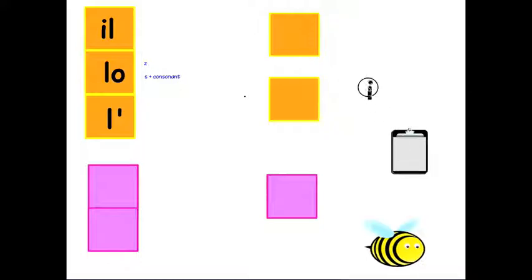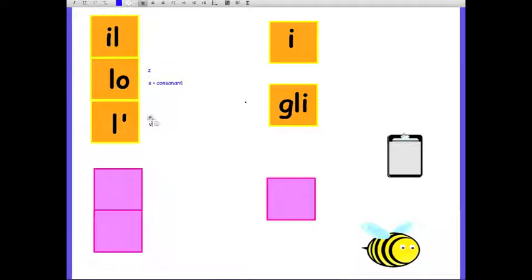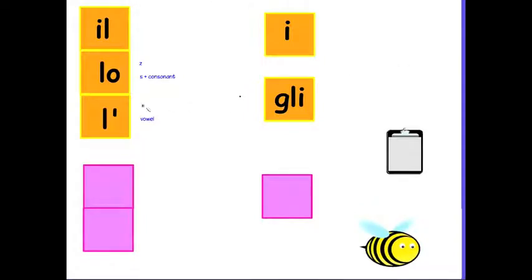So the plural, you have I, this is your standard plural. And then LO or L apostrophe, so if you have this or you have a word that starts with a vowel, you will have GLI. So this in the plural becomes this, or this, and this goes here.